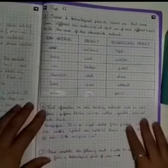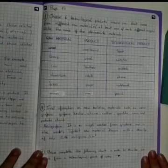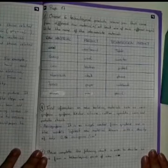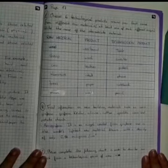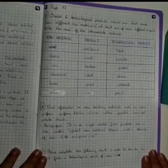Then we started with the first activity of our bulletin at page 17. The first exercise consists in choosing 6 products and telling its raw material, the product, and the technological product.